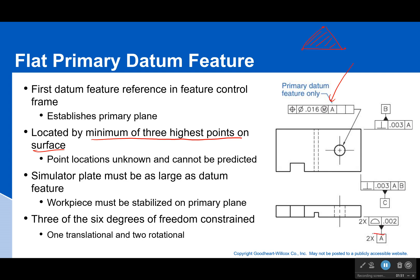Now when we're simulating this datum A—this is a continuous feature over this broken gap right here—it has to be at least as large as the datum feature because it's gonna need to be stabilized on this full plane.